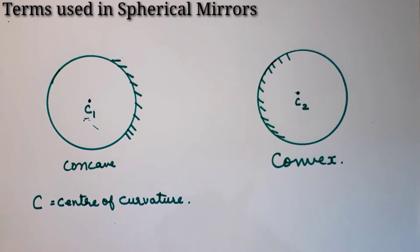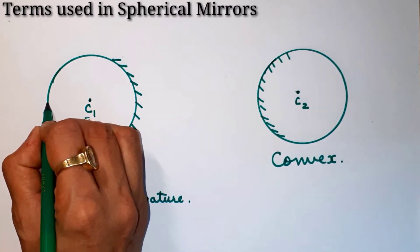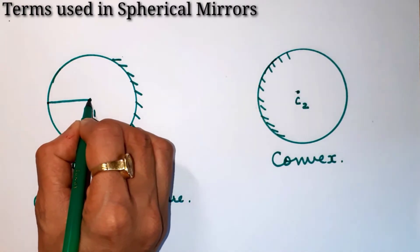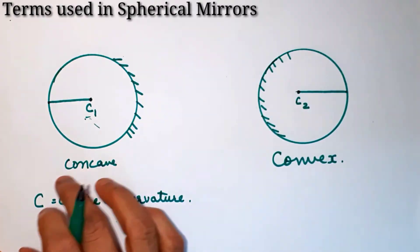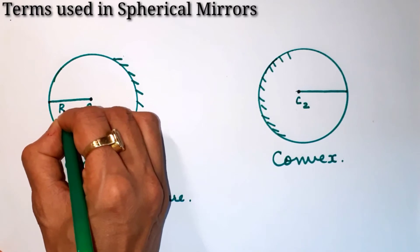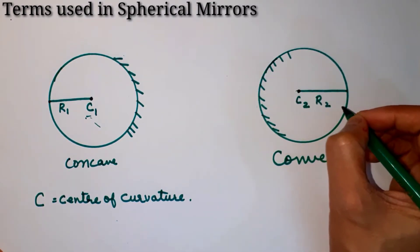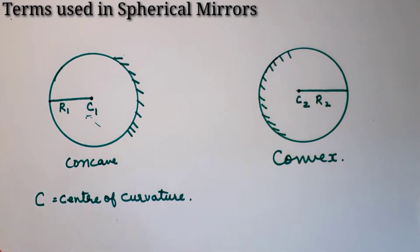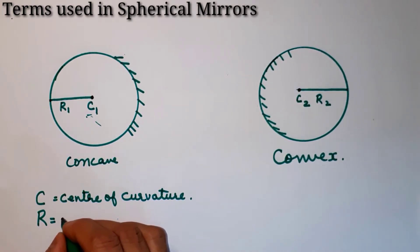Now we will talk about the radius of curvature. Since there is a sphere, there will be a radius. The radius of the sphere is denoted as R1 and R2. The radius of the whole sphere is the radius of curvature, and it is denoted as capital R.